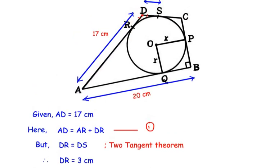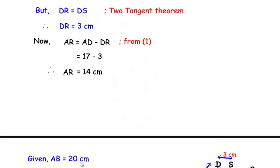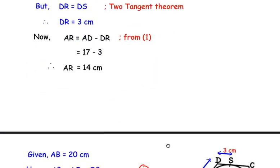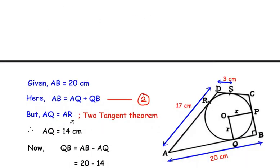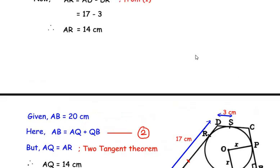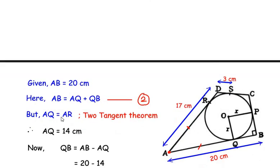Next, we proceed with the length AB. Given AB = 20 cm, we can write AB = AQ + QB. Considering A as an external point, it makes two tangents AR and AQ. By the two tangent theorem, AQ = AR = 14 cm.